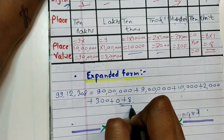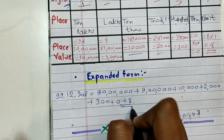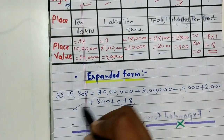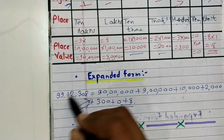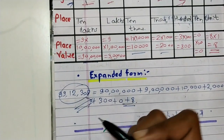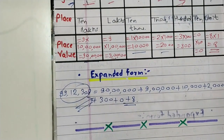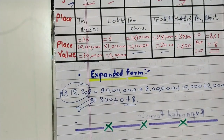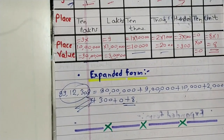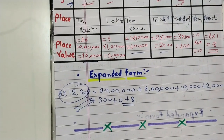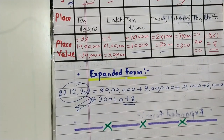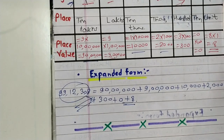Expanded form of 99,12,308: ninety lakhs plus nine lakhs plus ten thousand plus two thousand plus three hundred plus zero plus eight. This is the expanded form of the given number. That's all for today, friends. See you in the next lecture. Bye!